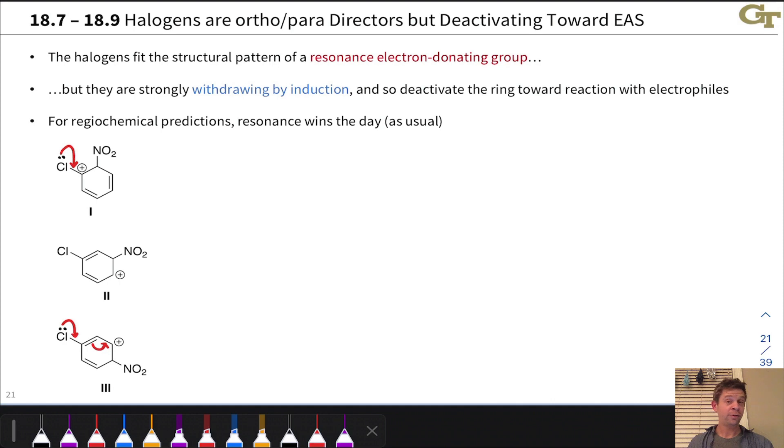Well, as it turns out, the halogens do deactivate the aromatic ring toward reaction with electrophiles, so EAS reactions of halobenzenes tend to be relatively slow.